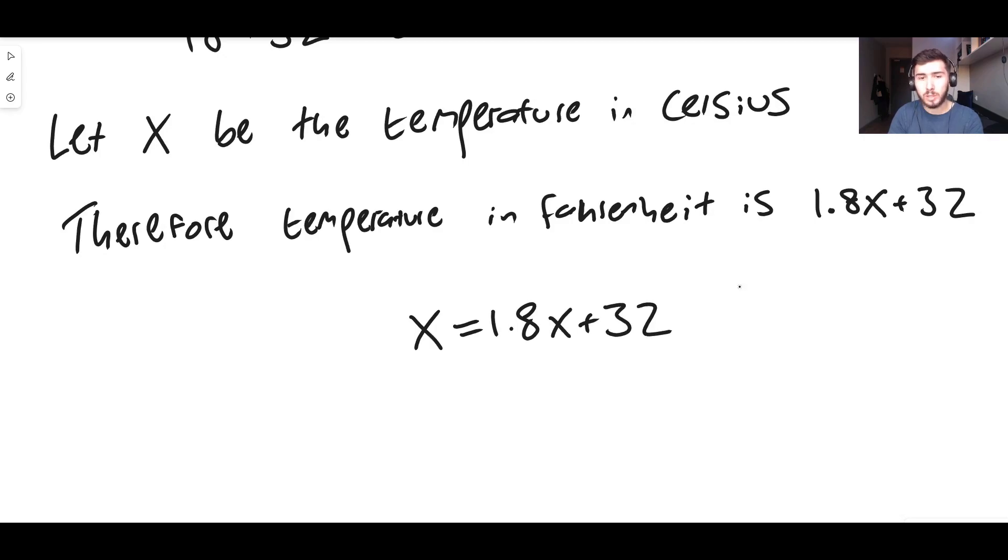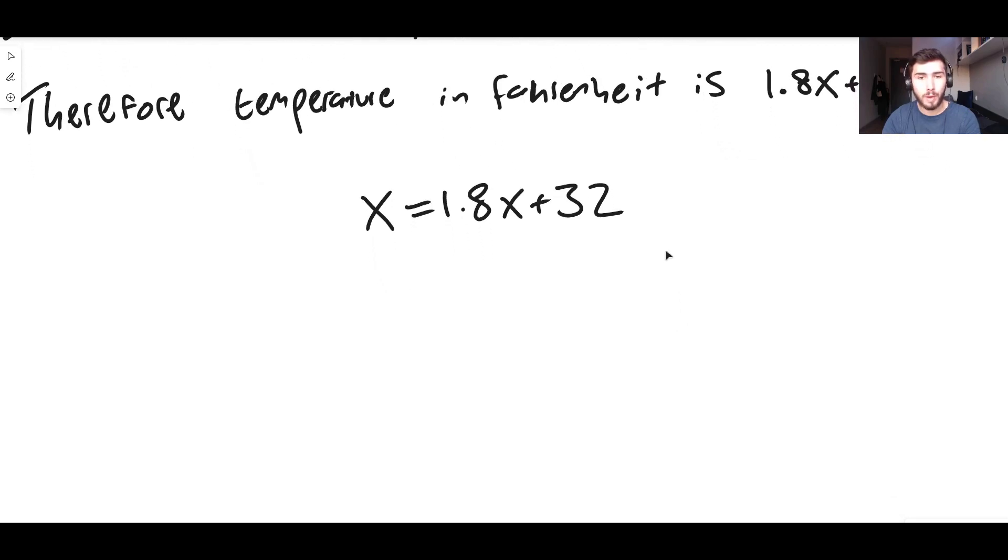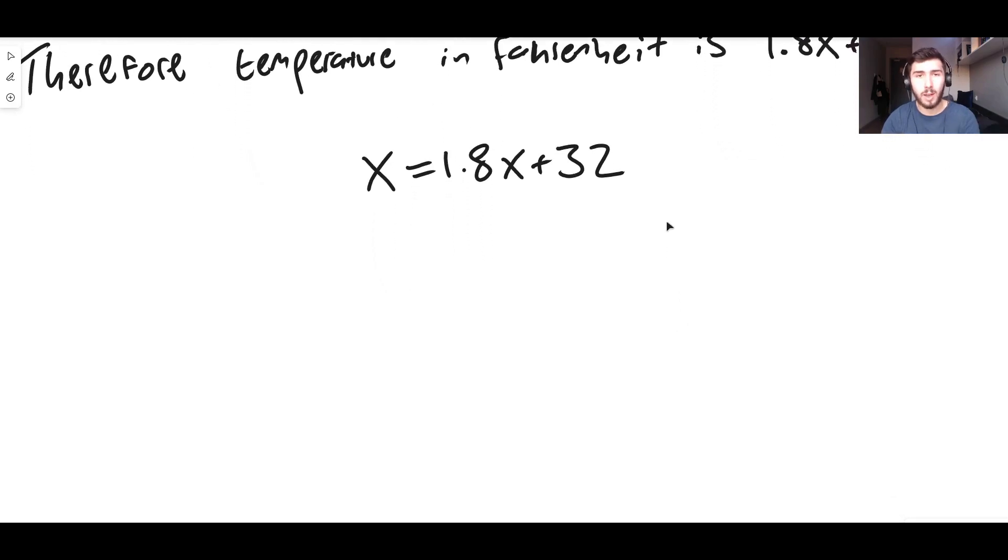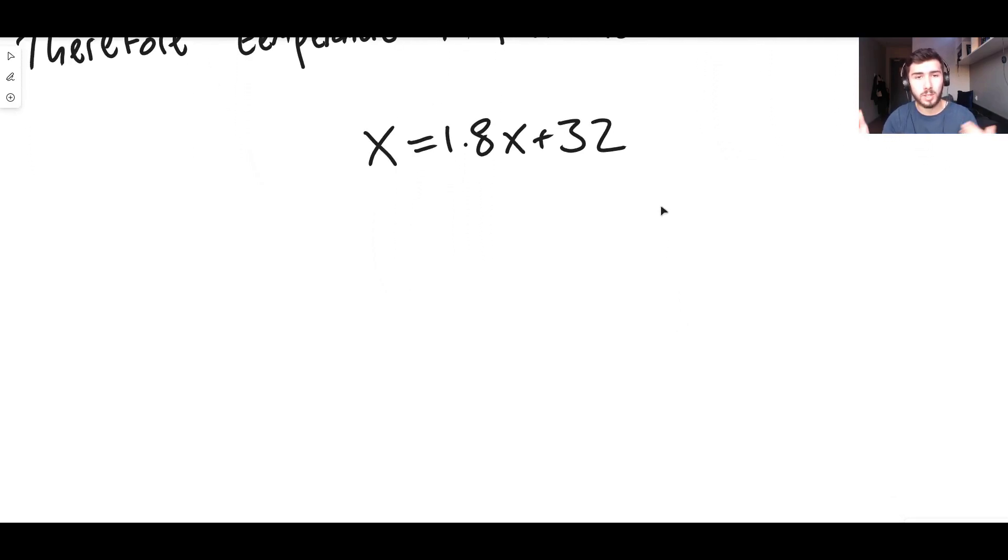If we can solve this for X, then what we're saying is the temperature in Celsius, which is X, and the temperature in Fahrenheit, which is 1.8X plus 32, if they're the same, what value for X is that? That's the value that everyone agrees on, so we just need to solve this for X and it will give us the temperature in both Celsius and Fahrenheit that everyone agrees is the same temperature.